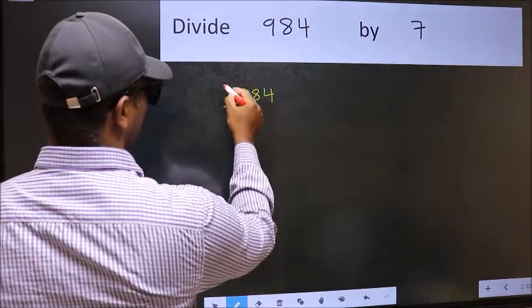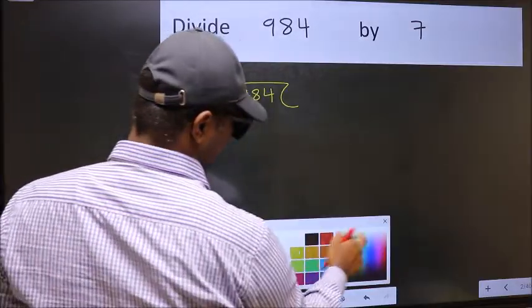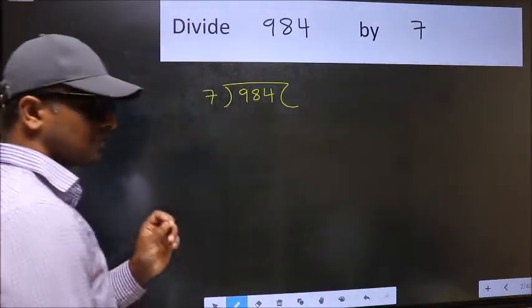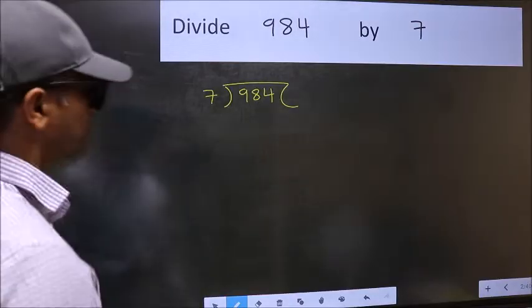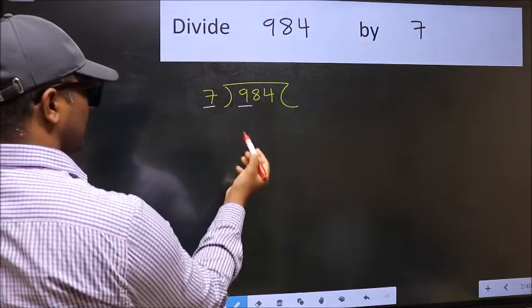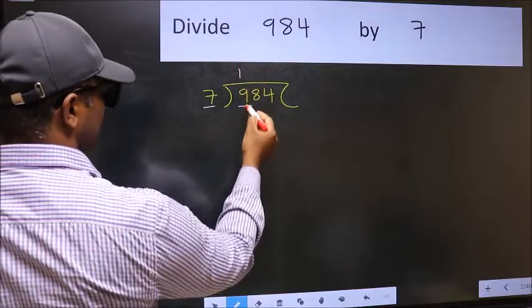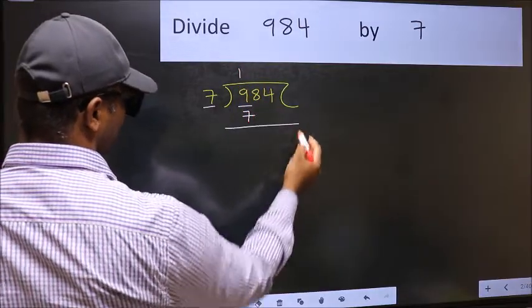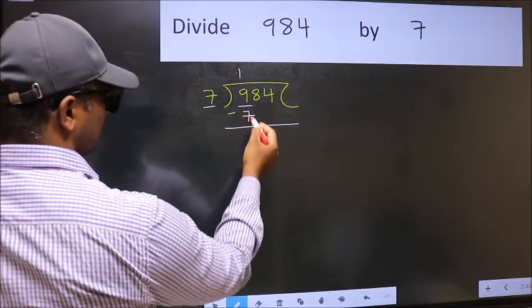984 and 7 here. This is your step 1. Next. Here we have 9 and here 7. A number close to 9 in 7 table is 7 once 7. Now you should subtract. 9 minus 7, 2.